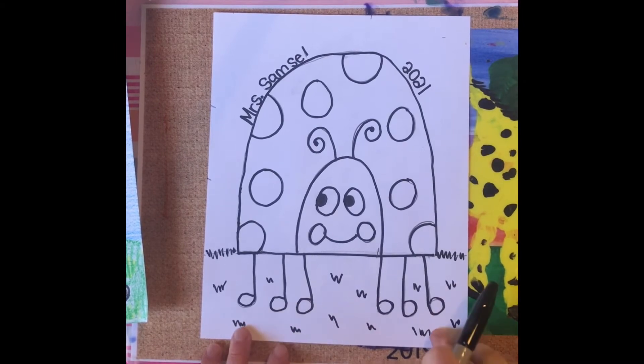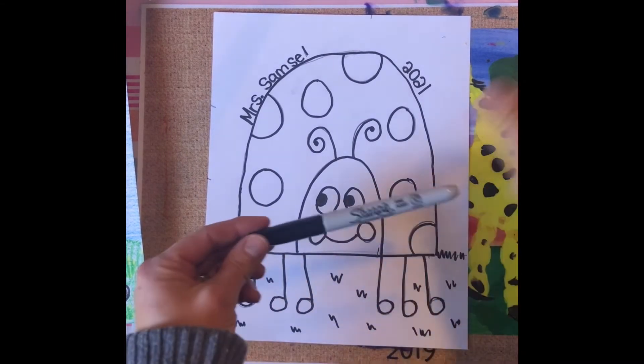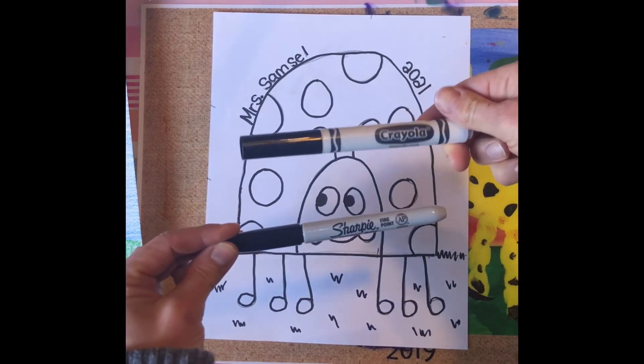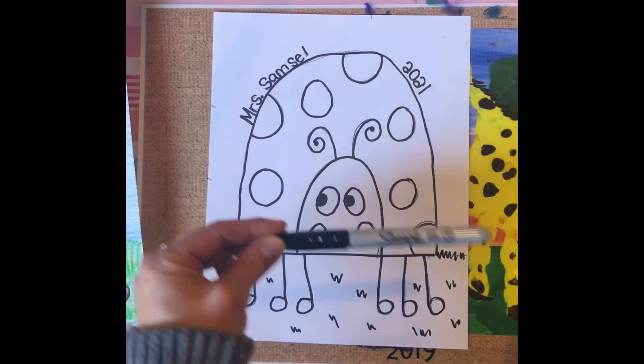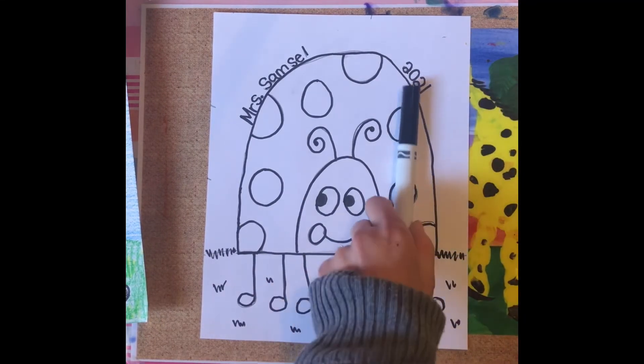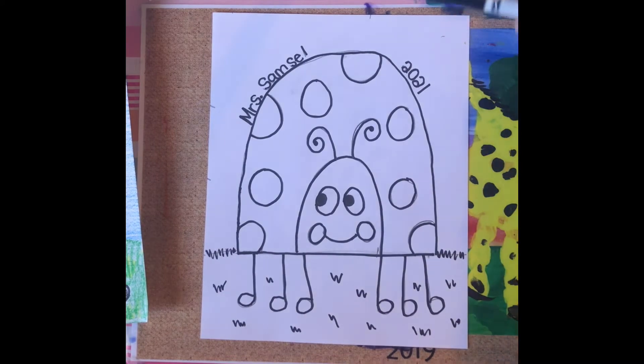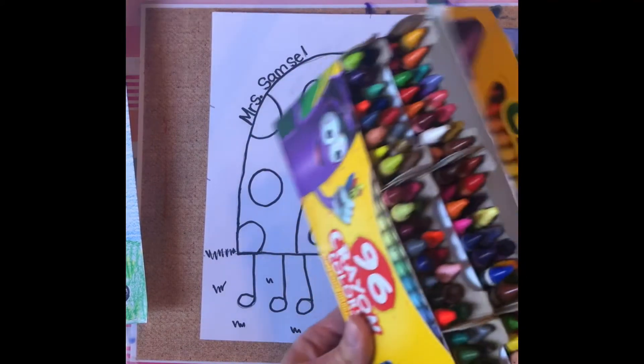All right, I have everything outlined in that black sharpie marker. If you don't have a black sharpie, you could always outline it in a black Crayola marker - that works too. I went in and I used my sharpie and I added some blades of grass, that little vertical line. And now I'm gonna use my markers or my crayons to color it.